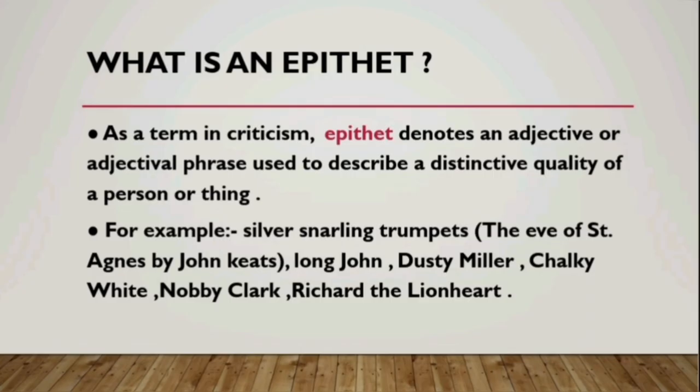Let us talk about epithet. Basically, epithet in English Literature, especially used in criticism, denotes an adjective or adjectival phrase. An adjective is a word which describes a noun or a pronoun. For example, 'beautiful girl' — the adjective 'beautiful' is the epithet. An adjectival phrase means a group of words which function as an adjective in a phrase. It describes a distinctive quality of a person or thing — an adjective or phrase which expresses some quality or attribute characteristic of a person or a thing.